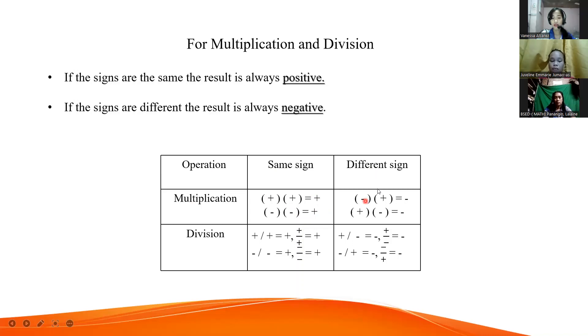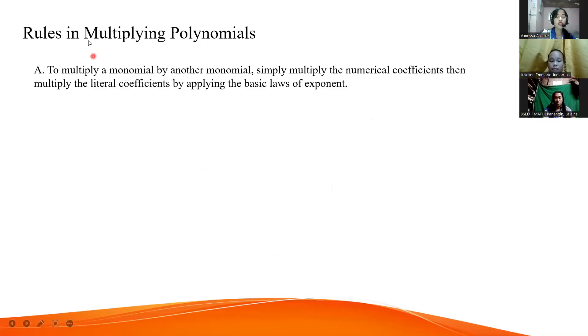Negative times positive, the answer is negative. And positive times negative, the answer is negative. In division, you base it on the same definition. Positive divided by positive, the answer is positive. Very good. Positive divided by negative, the answer is negative. Very good. Let's proceed to our main topic - rules in multiplying polynomials.